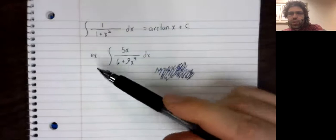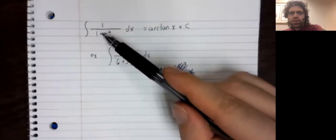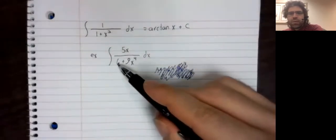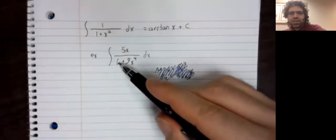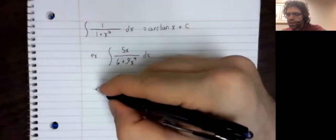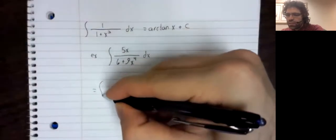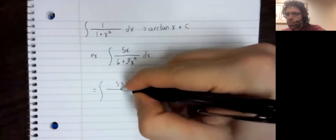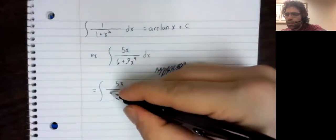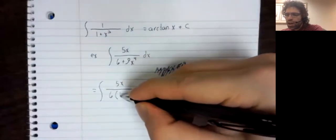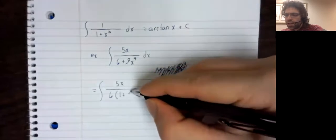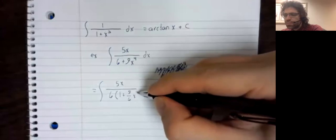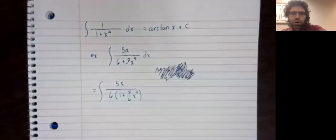If we wanted to use this formula, what would we need? Well, we wouldn't want a six here, we'd want a one. But we dealt with problems like that before when we were looking at the arc sine. That is not a fatal problem.